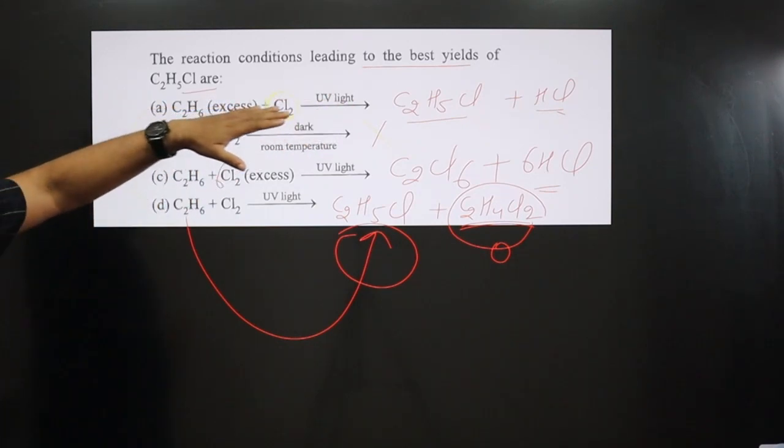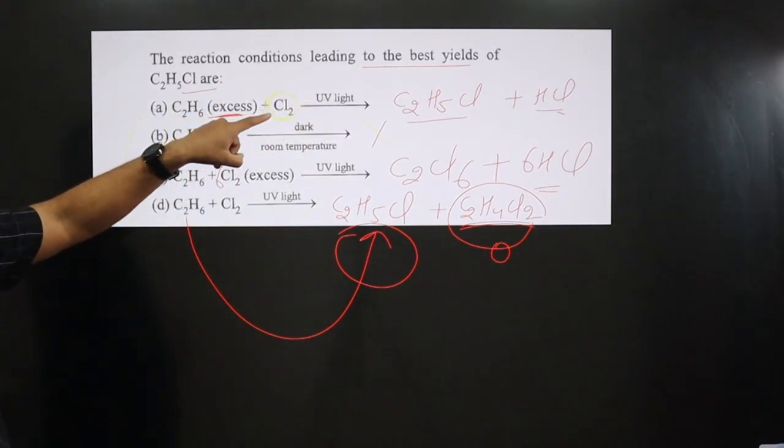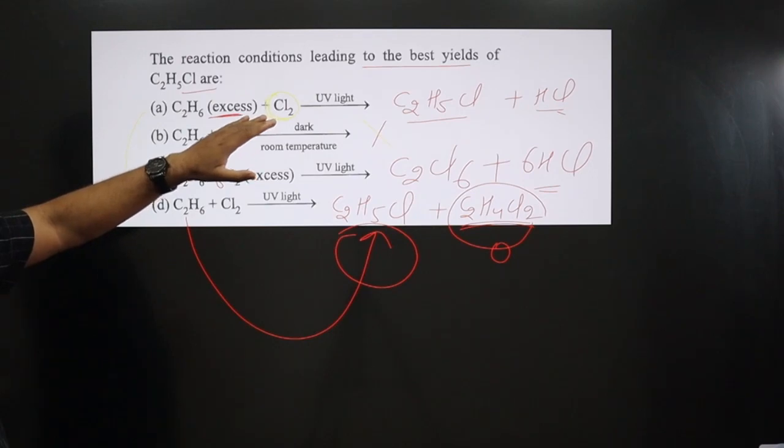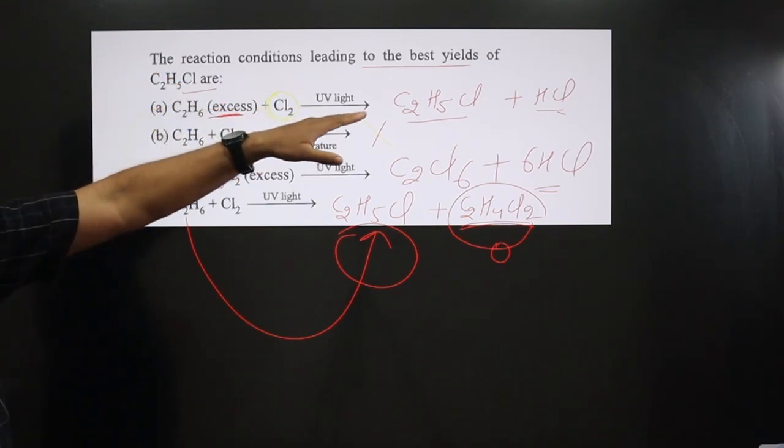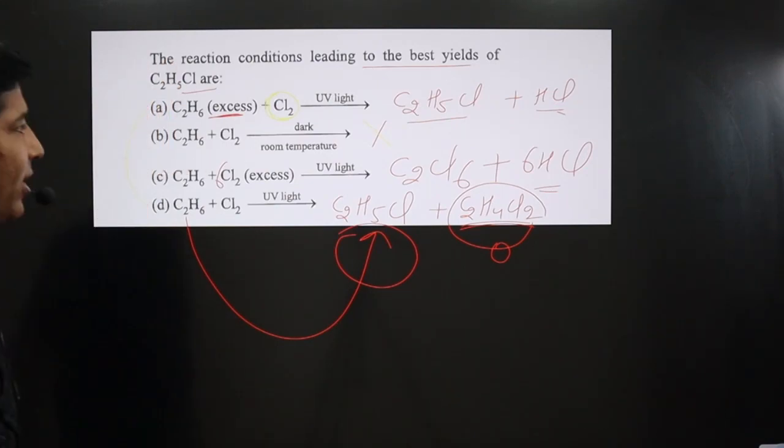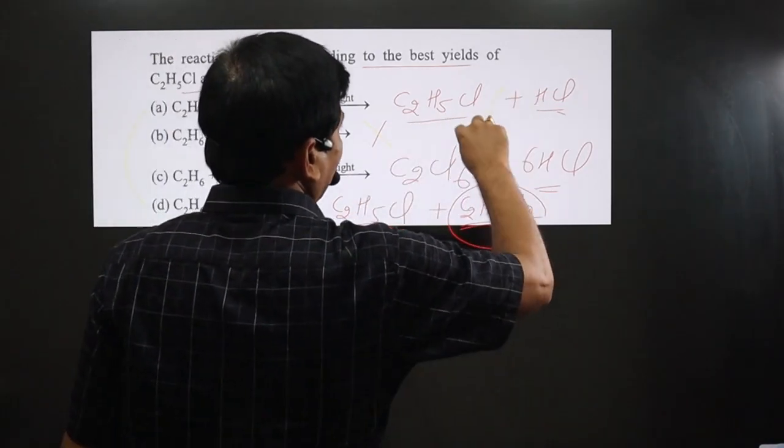In this case, complete use is there. We have Cl2 in limited quantity. This entire Cl2 will be reacting with C2H6 and forming C2H5Cl. Whatever the best yield is, we are getting in option A.